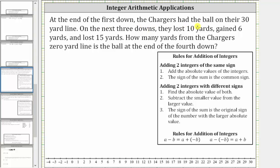At the end of the first down, the Chargers had the ball on their 30-yard line. On the next three downs, they lost 10 yards, gained six yards, and lost 15 yards. How many yards from the Chargers' zero-yard line is the ball at the end of the fourth down?